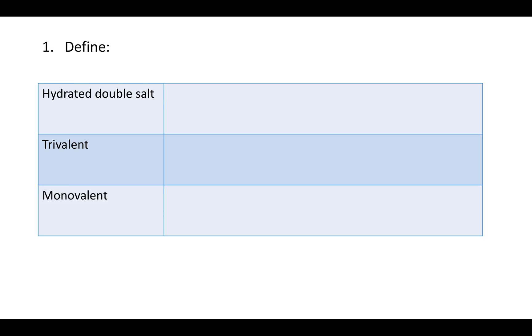Here's some help with the experiment 6 pre-lab. The first question asks you to find three terms; we'll go through these one by one. The first one is a hydrated double salt.